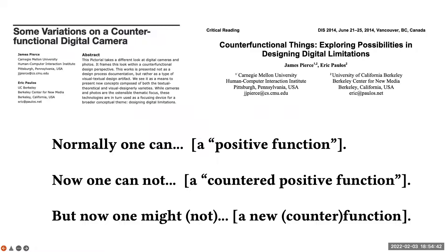Counter-functional design was developed by James Pearce and Eric Powers in two wonderful papers at DISC in 2014. Fundamentally critical, counter-functional design is most easily understood through the schema they provide to encourage the practice. It begins: normally one can do something — a positive function with a technology. Now one cannot do something — a counter-positive function. But now one might not do something else — a new counter-function. Crucially, the approach is both critical and adversarial, resisting or contesting a presumed affordance or use of a technology, but in doing so should also be generative of something else, creating and allowing for new experiences and affordances.